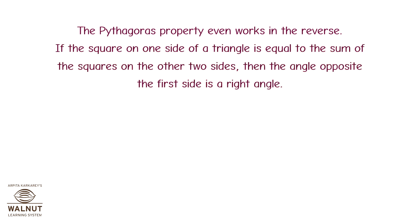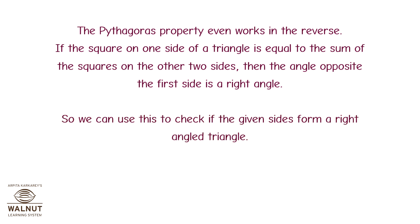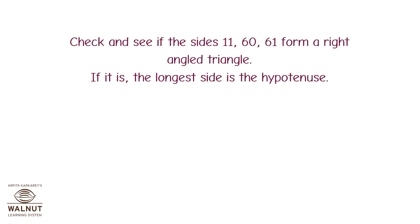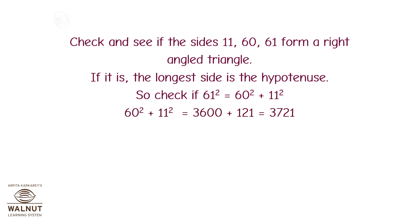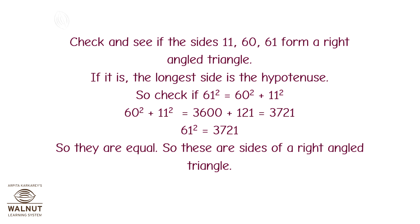The Pythagoras property even works in reverse. If the square on one side of a triangle equals the sum of the squares on the other two sides, then the angle opposite to the first side is a right angle. So we can use this to check if given sides form a right-angled triangle. Check if the sides 11, 60, and 61 form a right-angled triangle. The longest side is the hypotenuse, so check if 61 squared equals 60 squared plus 11 squared. 60 squared plus 11 squared equals 3600 plus 121, which equals 3721. 61 squared also equals 3721. So they are equal — these are sides of a right-angled triangle.